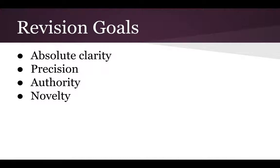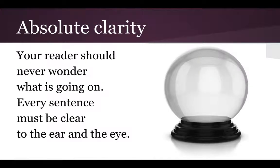What do these mean? Well, absolute clarity means that your reader should never wonder what is going on. You need to give enough information in every sentence so that it is clear to the ear and the eye, meaning that when it's read or your reader is looking at it on the page it makes sense, and it makes sense if your listener is listening to you speak the poem.